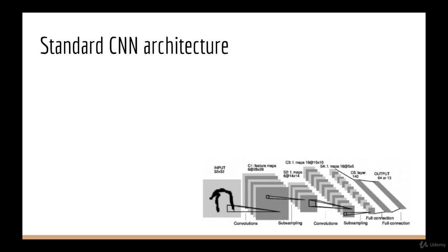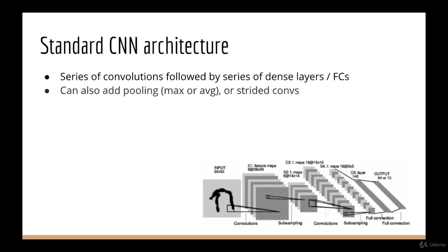Now that we've talked about convolution, what does a full convolutional neural network look like? Well, the standard architecture, inspired by the original LeNet, is basically a series of convolutions followed by a series of fully connected layers or dense layers. We also add pooling, which can be of the max variety or the average variety, to downsample the image after certain convolutions. So a standard architecture would be like this: conv max pool, conv max pool, flatten dense, and then a final dense with softmax.